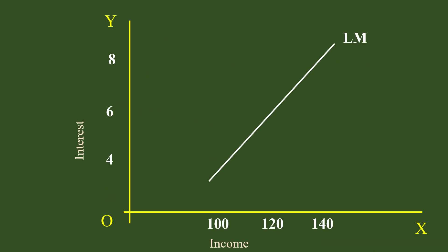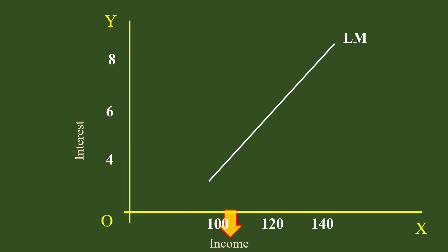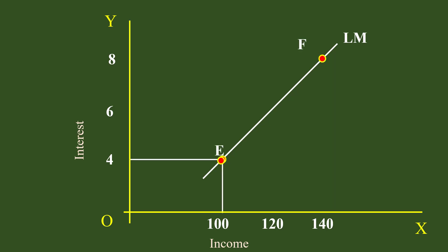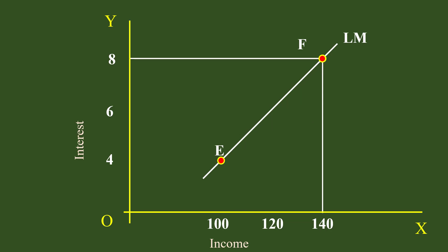Next, take the LM curve. It slopes upward from left to right. It also relates interest and income, but here there is a positive relation between them. When interest increases from 4% to 8%, the income increases from Rs.100 to Rs.140. This is movement along the curve.